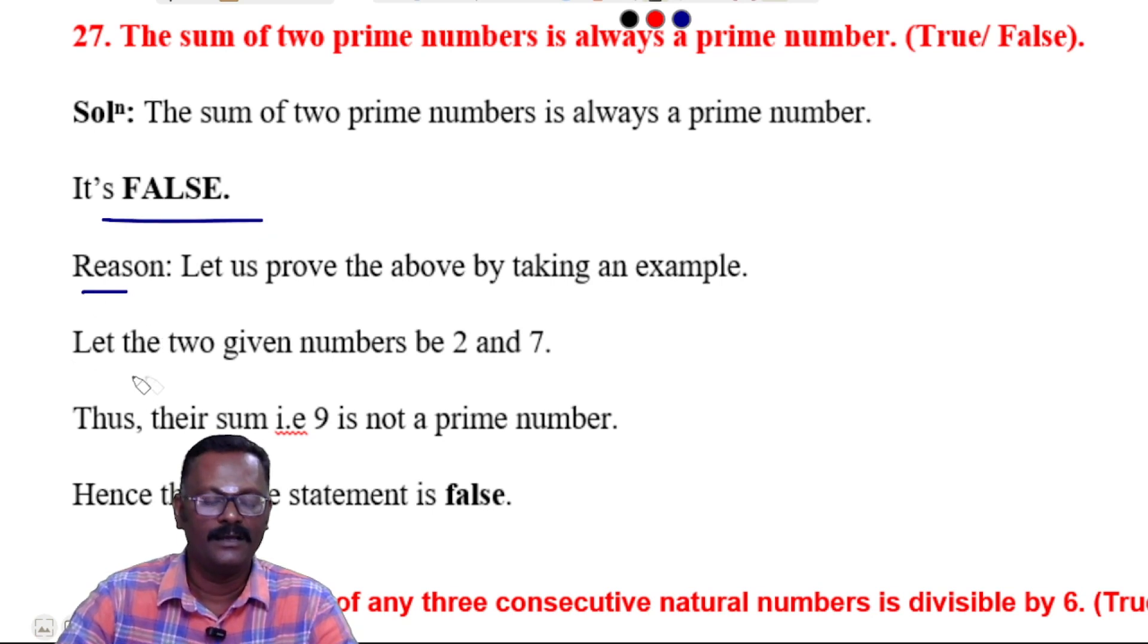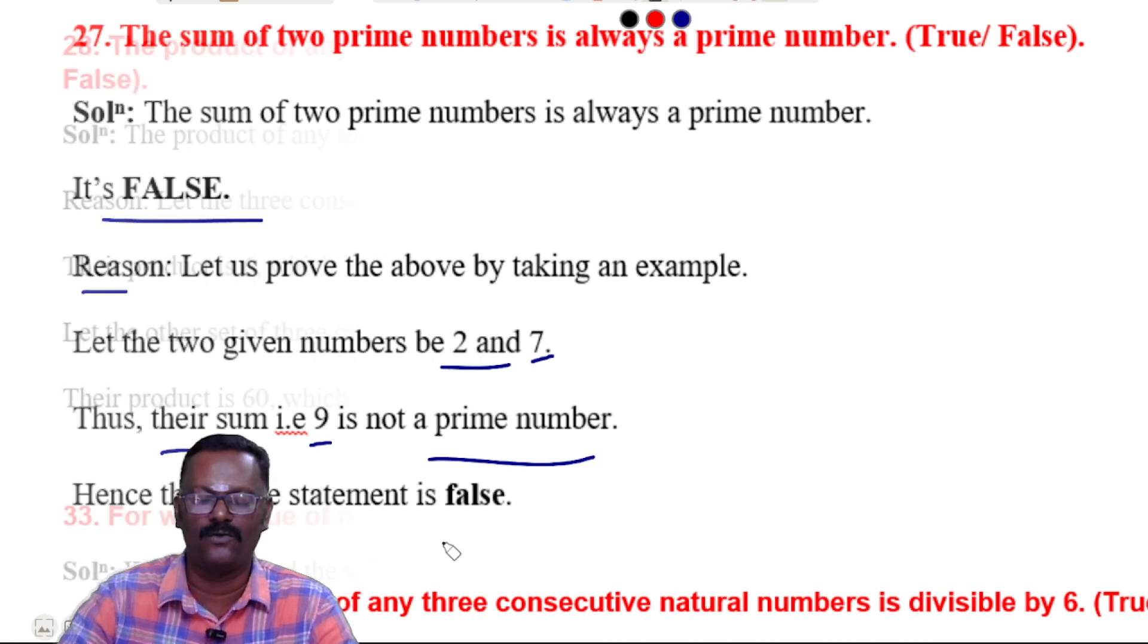Let us prove the above by taking an example. Let the two numbers be 2 and 7. Their sum is 9, and 9 is not a prime number. Hence, the above statement is false.